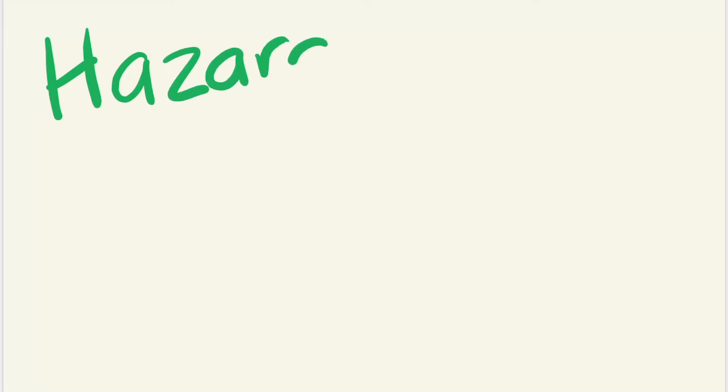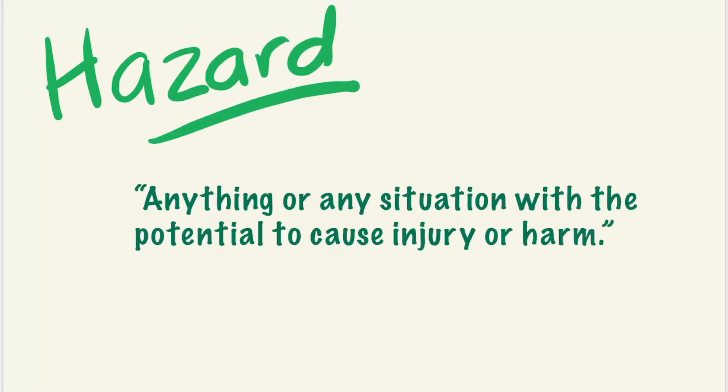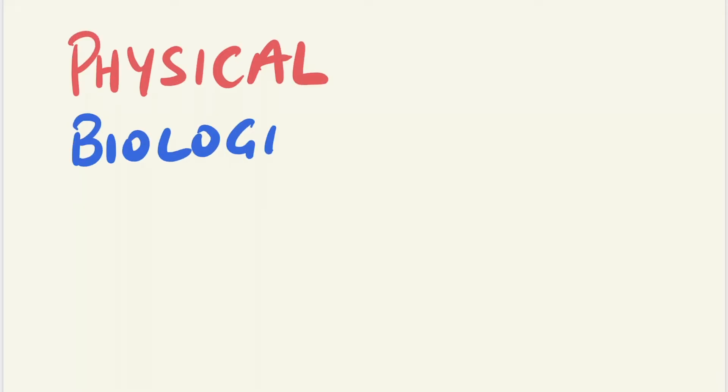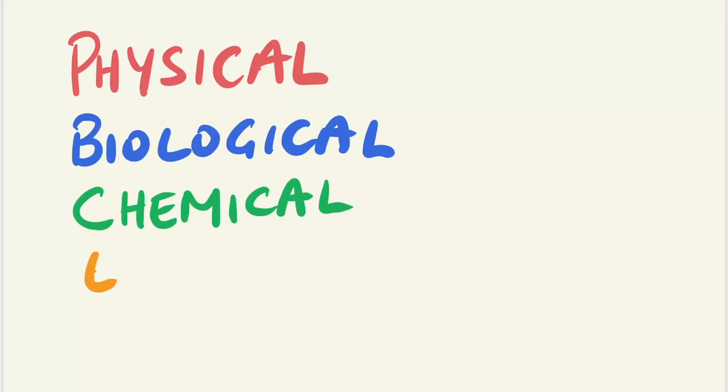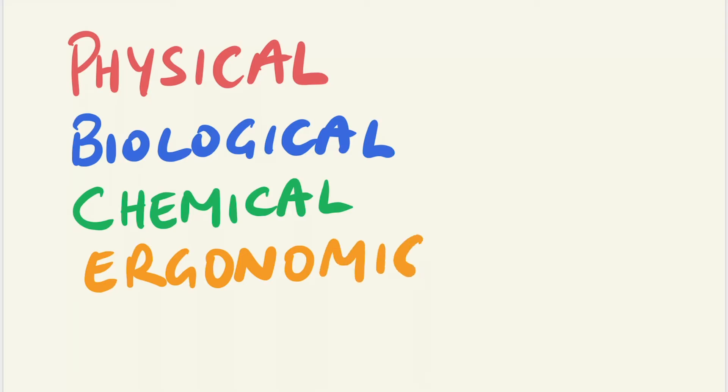All these dangers that I've described in the previous examples are what is known as hazards. Hazards are defined as anything or any situation with the potential to cause injury or harm. In occupational medicine, as a worker, depending on your workplace environment, you may be in contact with a number of potential hazards. These can be broadly categorised into physical, biological, chemical, ergonomic, and psychosocial.